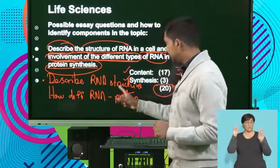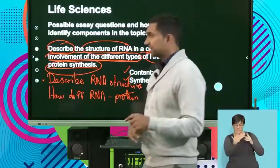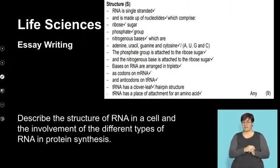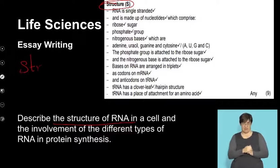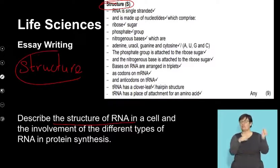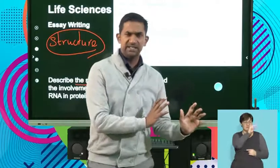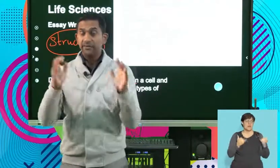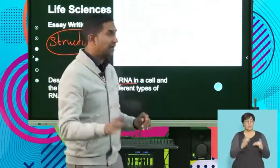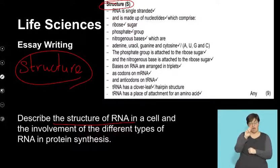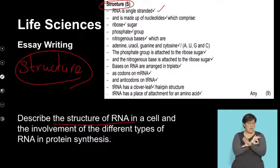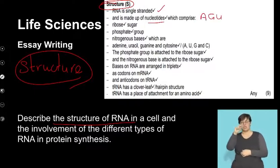Now that we've read the topic and identified the different aspects, let's look at the next step. In the first aspect, we've got to refer to the structure of RNA. It's important to recollect our knowledge on RNA structure. Remember we've looked at DNA structure and its types; now we're looking at RNA and its structure. You need to put together a concept map. Remember that RNA is single-stranded - note that in your planning. It's made up of nucleotides: A, G, U, and C.